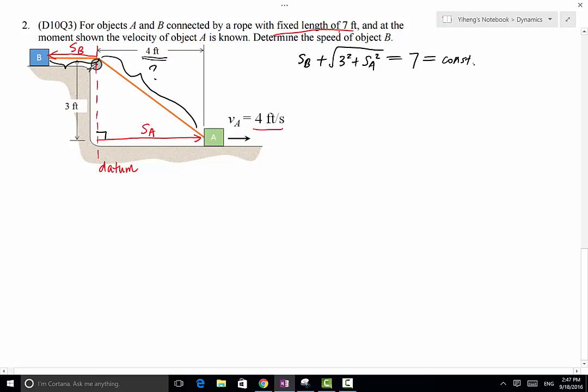Therefore, the next step is to find the time derivative of the entire equation. Therefore, the left-hand side becomes dSB/dt plus d square root, 3 squared is 9 plus SA squared. So SA squared plus 9 divided by dt. Right-hand side is simply 0 because for a constant, its time derivative is 0.